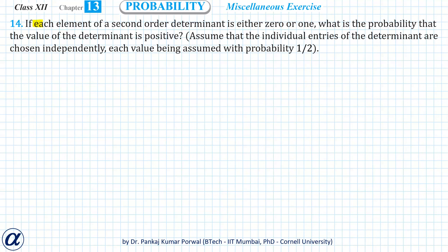In this question, we are given that each element of a second-order determinant is either 0 or 1. What is the probability that the value of the determinant is positive? We are assuming that individual entries of the determinant are chosen independently, with each value being assumed with probability of half — that is, we can choose any entry to be either 0 or 1 with probability half, and each entry is chosen independently.